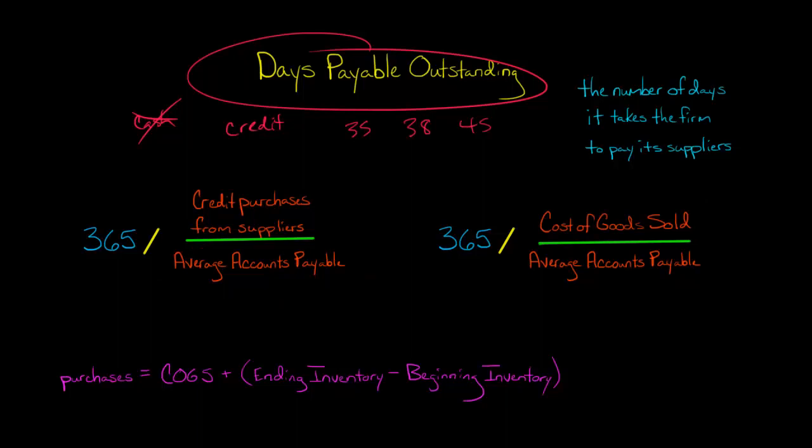Sometimes people will calculate it as cost of goods sold divided by average accounts payable, but it's more accurate to use credit purchases from suppliers. Why don't people usually use credit purchases from suppliers? Because you have to do some calculations.